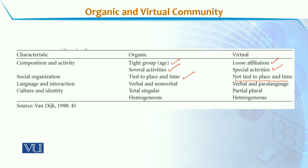और जो language and interaction होता है organic communities में, वो verbal और non-verbal दोनों होता है. और virtual में verbal के साथ paralanguage होता है. Paralanguage जैसे emojis की एक language है, तो आप certain time अपनी emotions को react करने के लिए emojis के थ्रू अपनी feelings reflect कर रहे होते हैं.